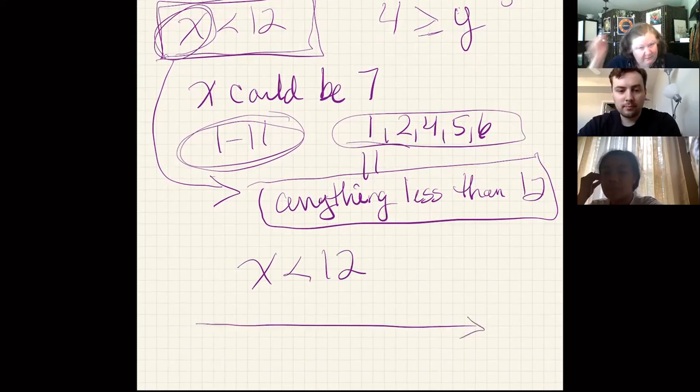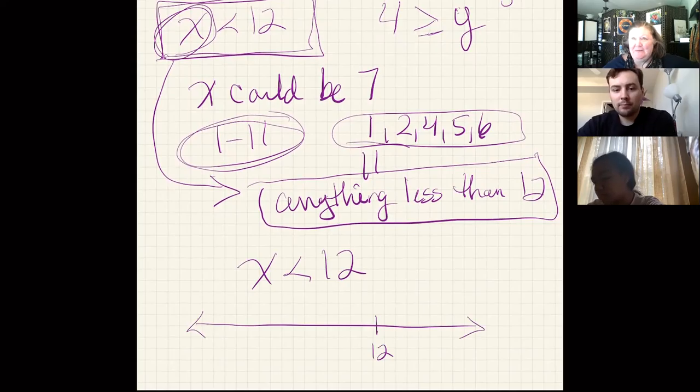And so if I have the inequality x is less than 12 and I'm trying to find values that could make this inequality true, we like to use a number line. And you all discovered a lot of things about that number line in the Desmos on Monday.